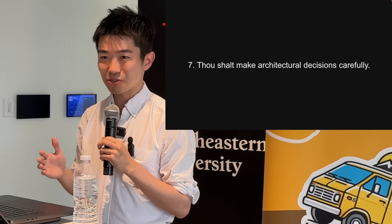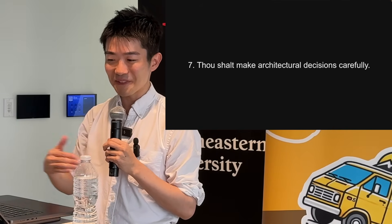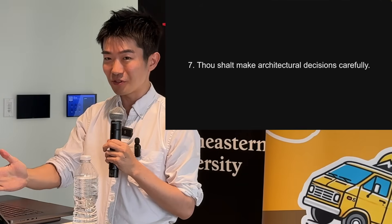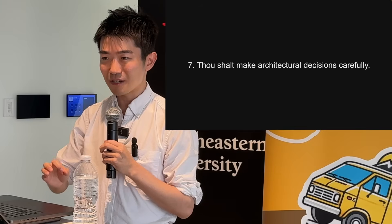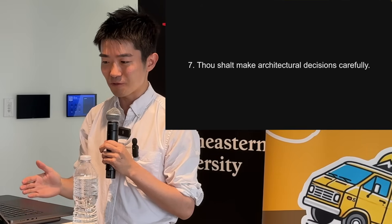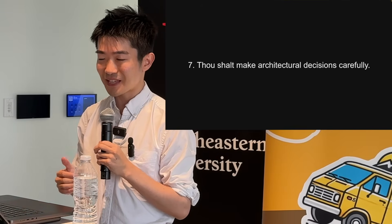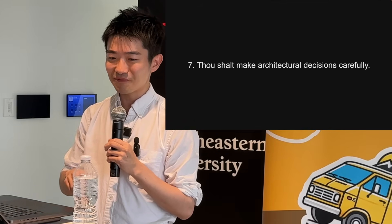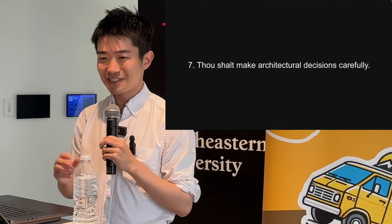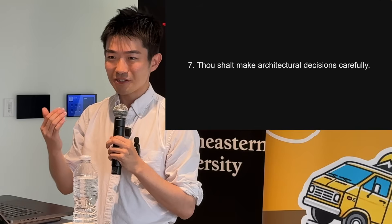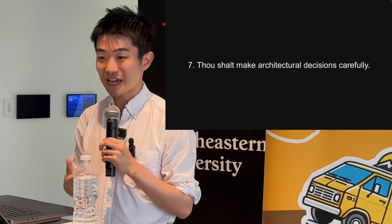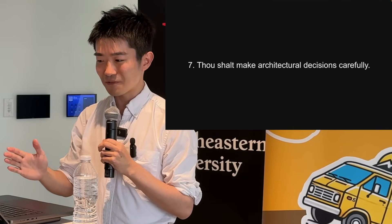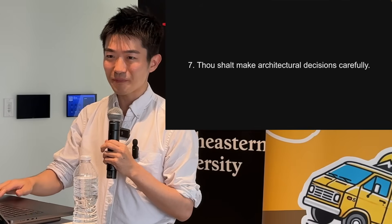Number seven: make architectural decisions carefully. You might notice some of these things are things we should already be doing as software engineers, but with AI they sometimes become even more important. AI is helpful for making architectural decisions — you can ask things like should I use this framework or that one, should I use GCP or AWS, what are the trade-offs? You can get a lot of information from AI, both historical and up-to-date. I recommend getting help from AI to do that better.